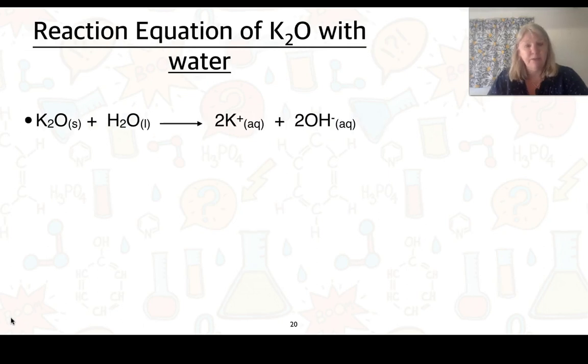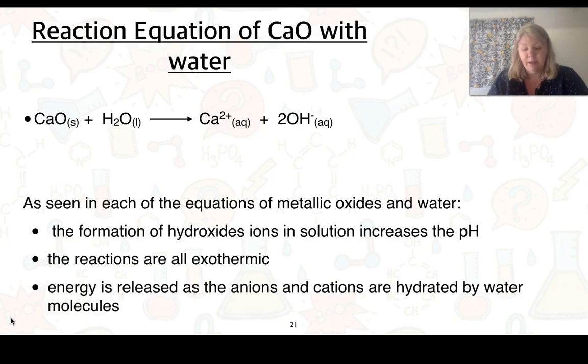Here's our next equation. So potassium oxide, again, because this is a metallic oxide, it will form hydroxide ions. Our third one, calcium oxide, and once again, forms our hydroxide ions. You need to make sure that your equations are fully balanced as well. So we can see that hydroxide ions are formed in the solution. That's going to increase our pH. All of these reactions are exothermic. And in the previous topic, we talked about endothermic and exothermic reactions. And this is a release of energy because the cations and anions are hydrated by water molecules.